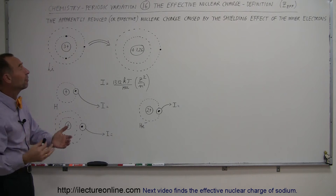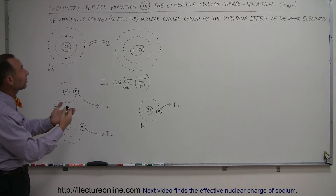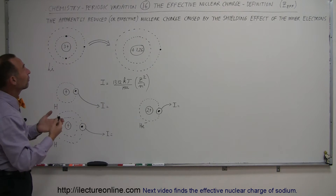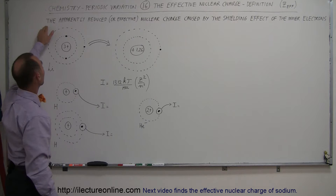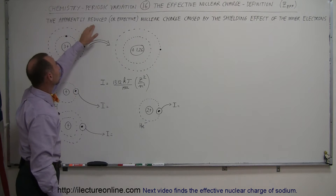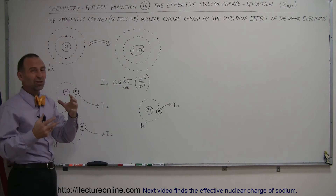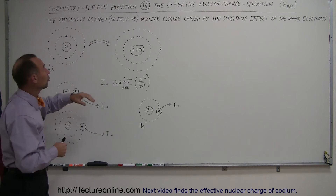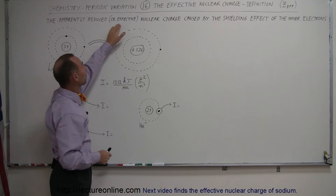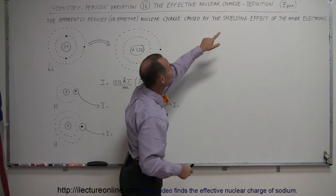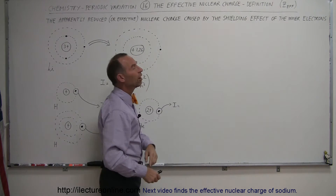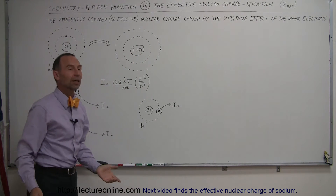A good definition for the effective Z, or effective nuclear charge: it's the apparently reduced — or effective — nuclear charge caused by the shielding effect of the inner electrons.